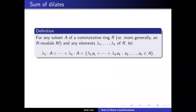Let's first talk about sum of dilates. For sum of dilates, if you have a subset A of a ring R and elements lambda_1 to lambda_k, then you can define this sum of dilates lambda_1 times A, and so on, which is what you expect.